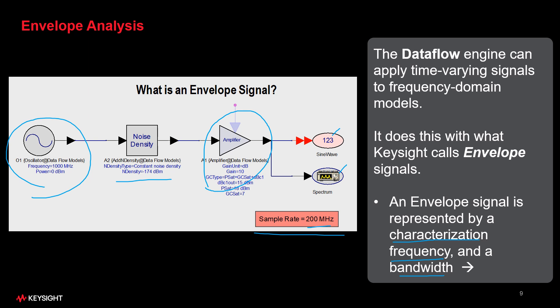Now, normally we wouldn't be able to see a 1000 MHz sine wave sampling at only 200 MHz, but envelope signals are sampled not at the carrier rate, but at the modulation rate. That's what makes these analyses so fast.